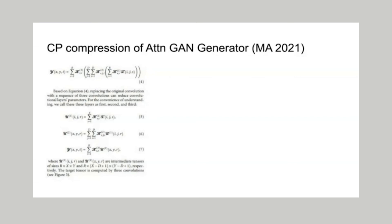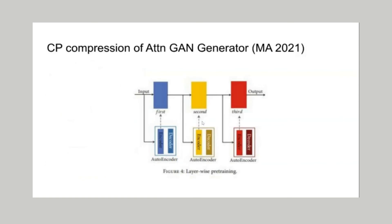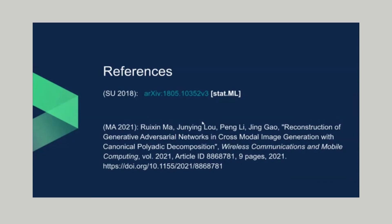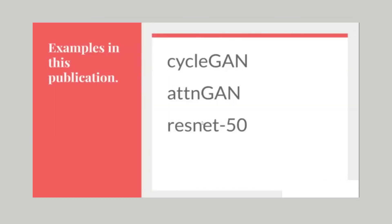Two references used in this review of compression techniques are presented. The last part of the talk is an addendum with three examples of neural networks and graphical dumps, which may be used as reference: the CycleGAN, the attention network, and the ResNet-50, used to explain and review tensor compression techniques.